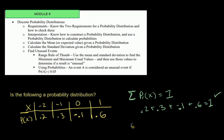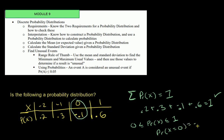The second requirement is that all probabilities must be between zero and one. Is that true here? No — the probability that X equals 0 is negative 0.1, and that's not allowed. Because of this, the table is not a probability distribution function.